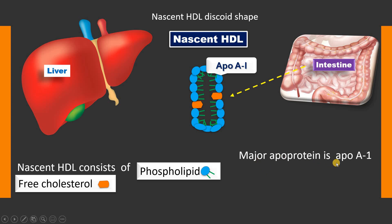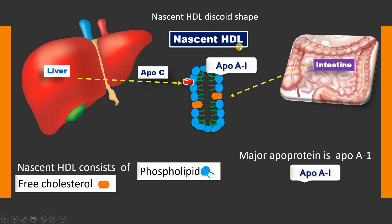ApoA1 is the major apoprotein of high-density lipoprotein and plays a pivotal role in HDL metabolism. Among all apoproteins present in HDL, ApoA1 accounts for 70% of the total apoproteins. Apart from this, when the nascent HDL is released into the circulation, it acquires apolipoprotein C — mainly C2 — and apolipoprotein E from the liver through the circulation.